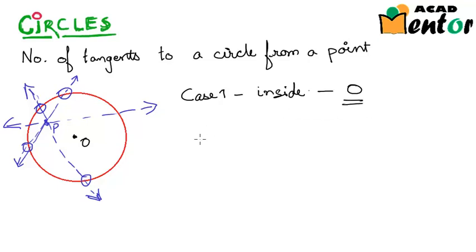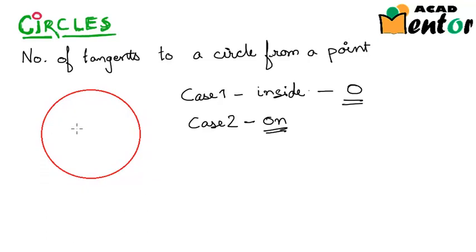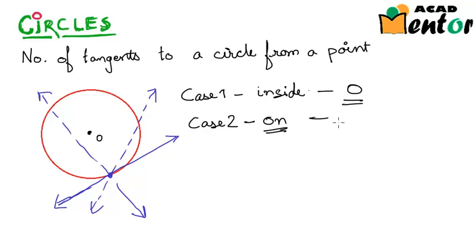Case two is when the point is just on the circle. This is our circle again with center at point O, and this time we have point P right on the circle. We discussed that there is a possibility of just one line that is tangent to this circle passing through this point. Any other line would be a secant, cutting the circle in two points. So there is only one tangent possible when the point is on the circle.